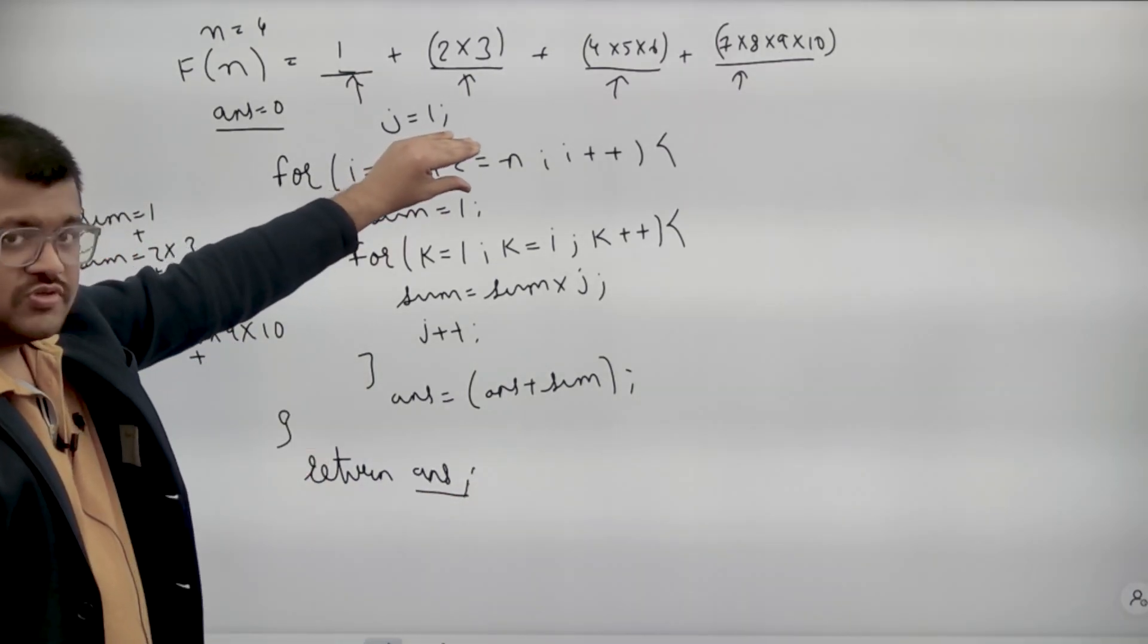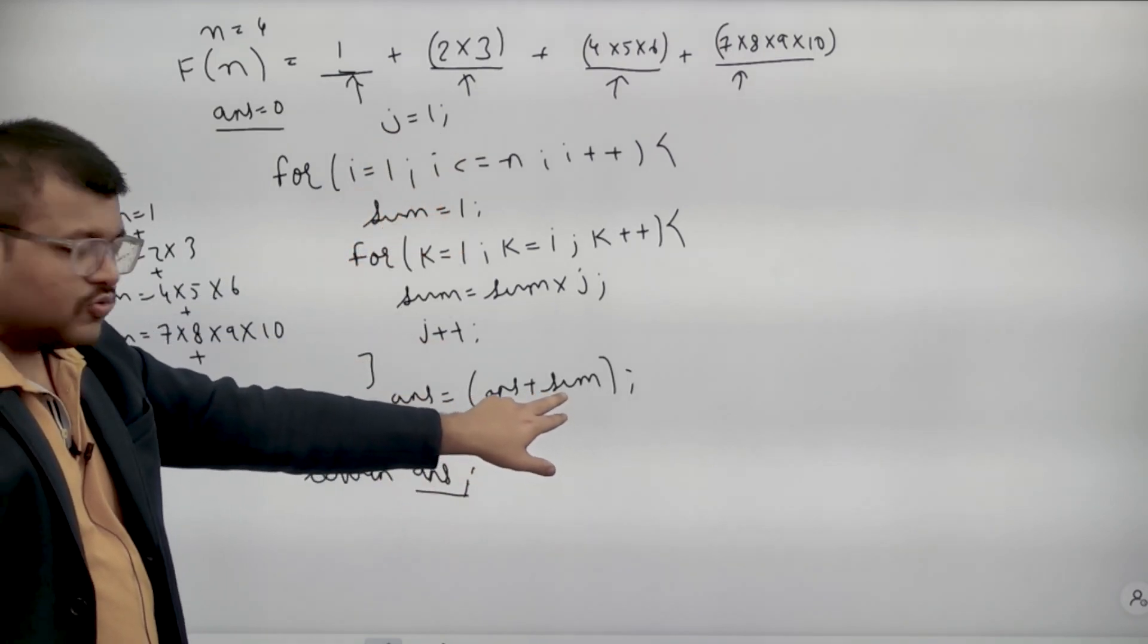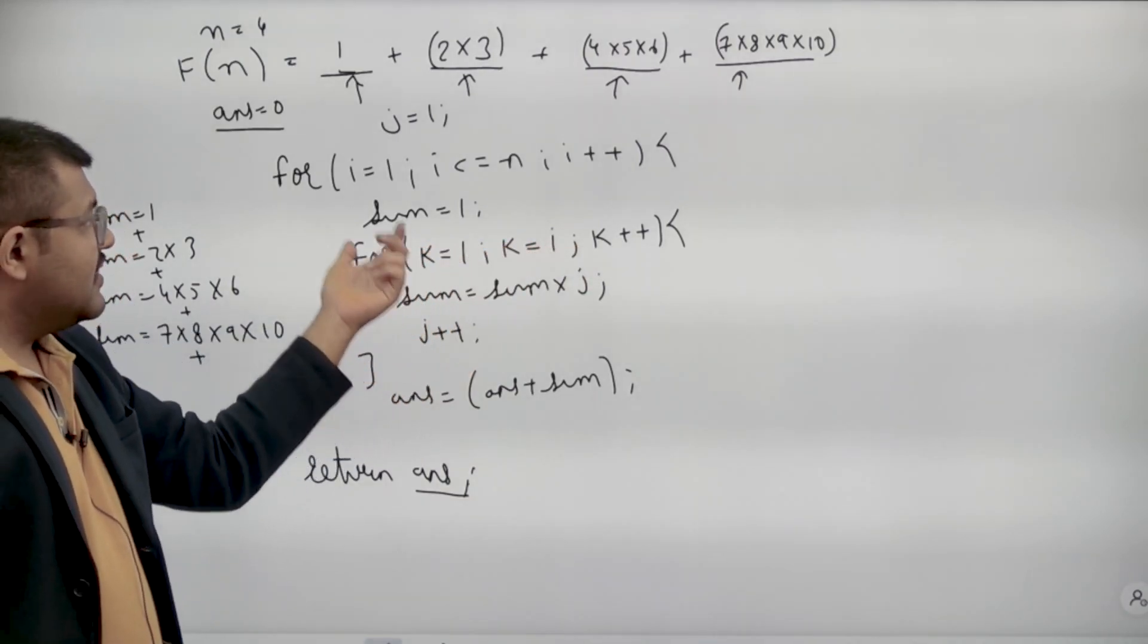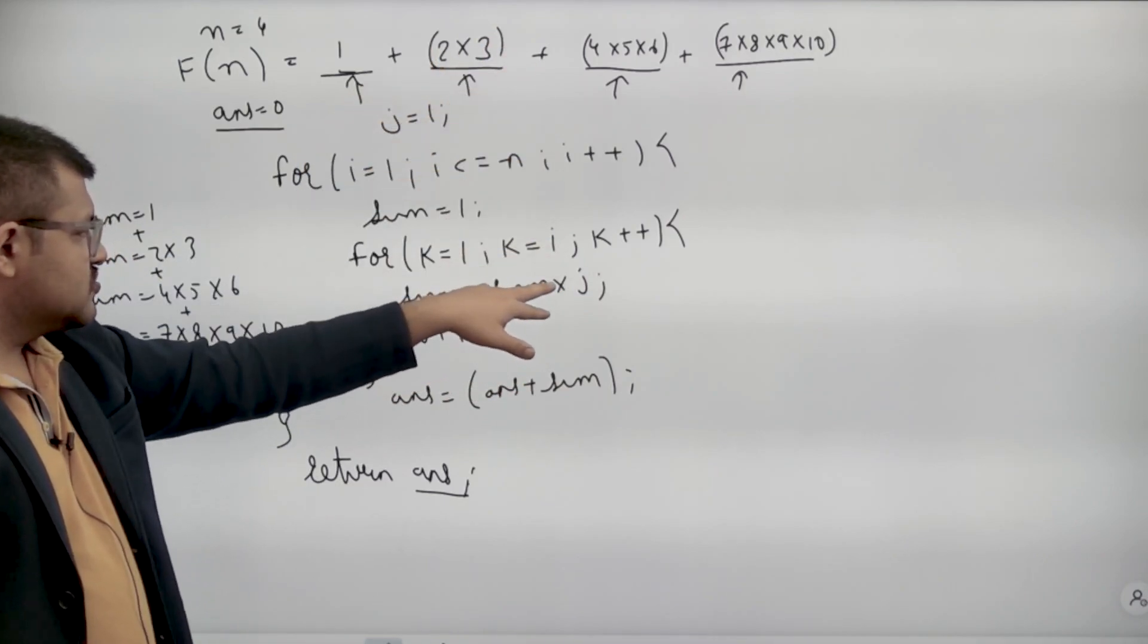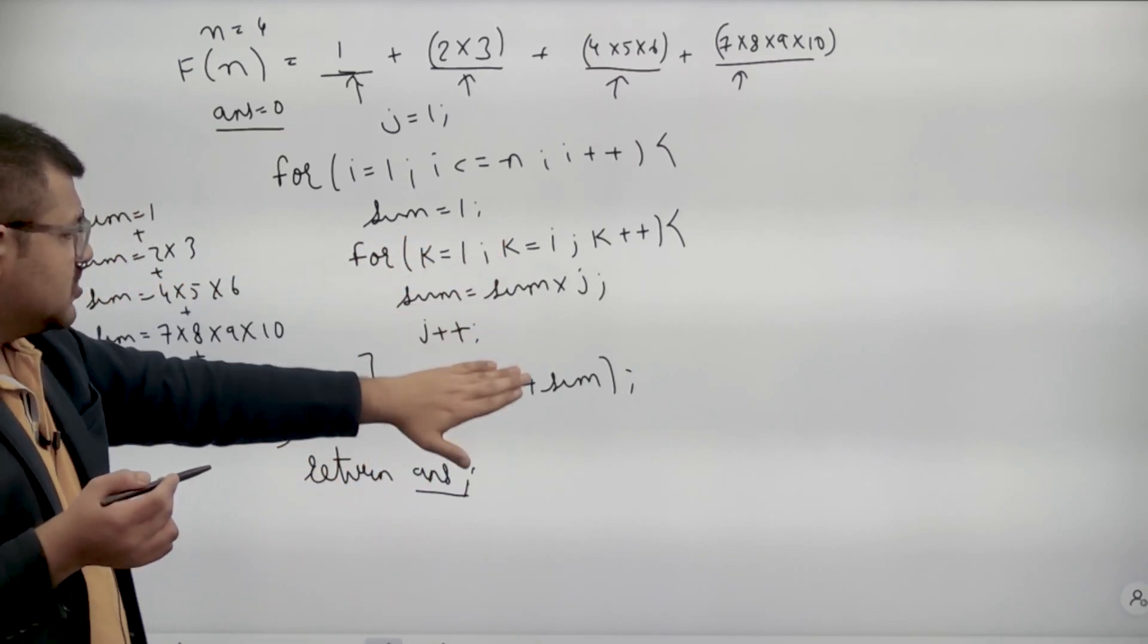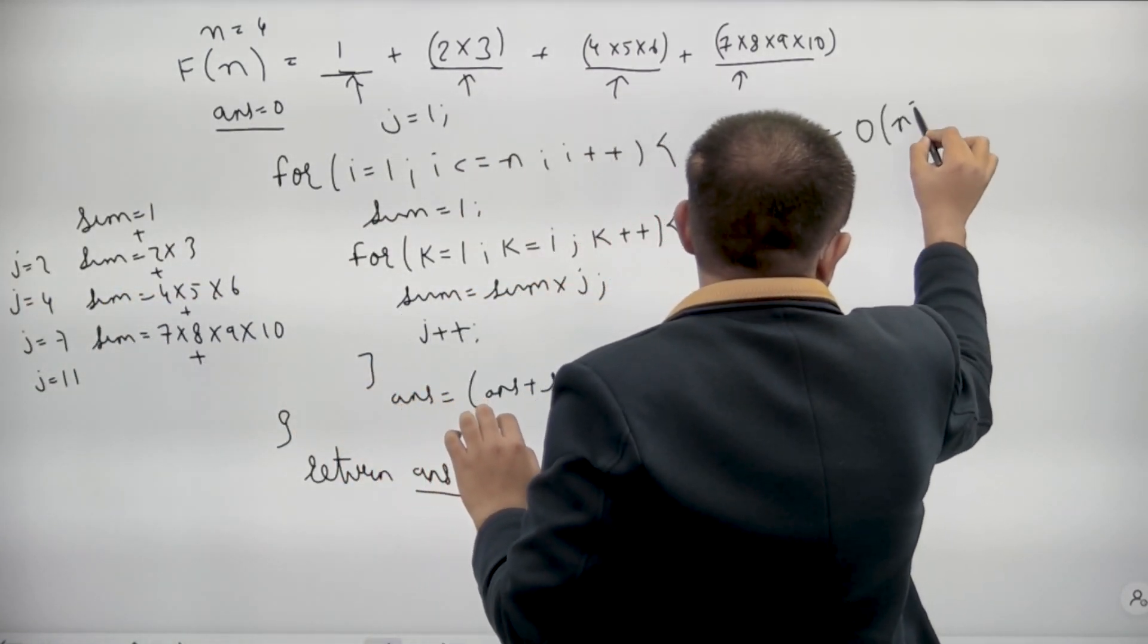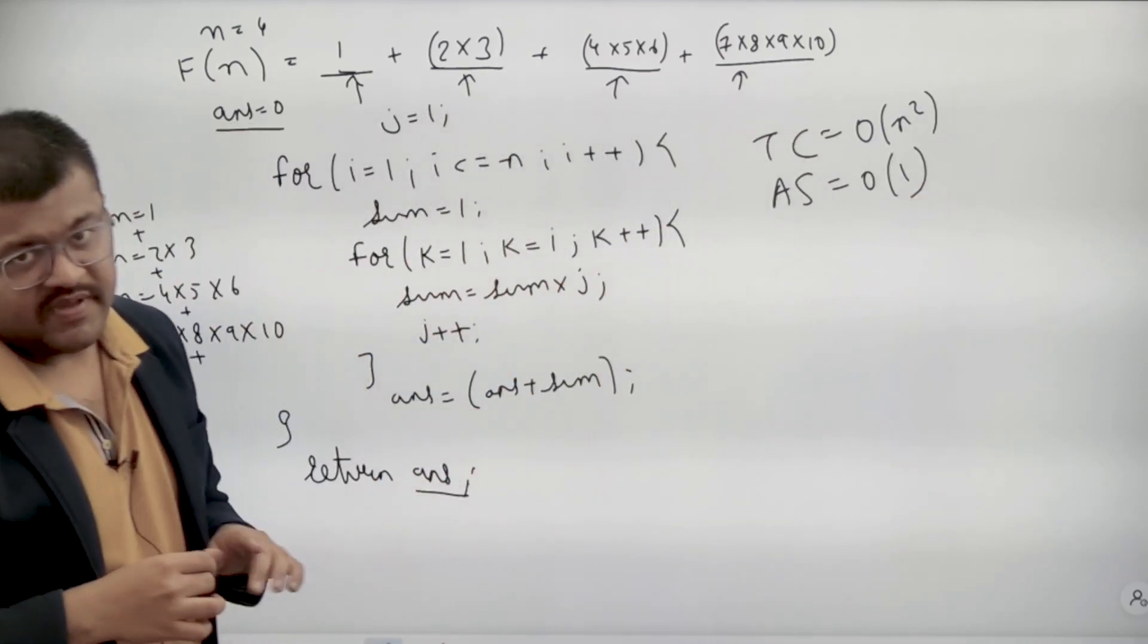So there are total n terms whose sum I want to do. So I will calculate those n terms and every time I will add it to my answer variable. What are the n terms? The ith term is the product of i terms. So I have a loop of i size and value of each term is increasing by 1 every time. So sum equals to sum into j and j plus plus. So this will calculate individual terms and they will add it to my answer. What will be the time complexity? There are two loops. It will be big O of n square. What would be the auxiliary space? It will be constant. We will not require any extra space.